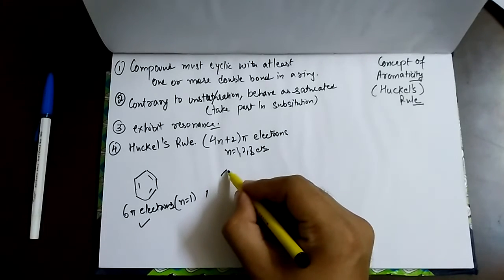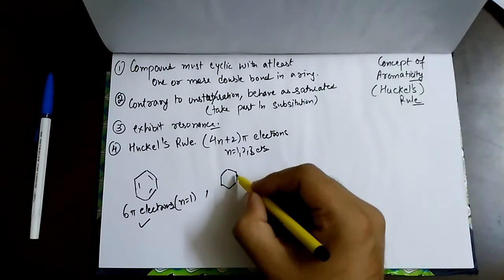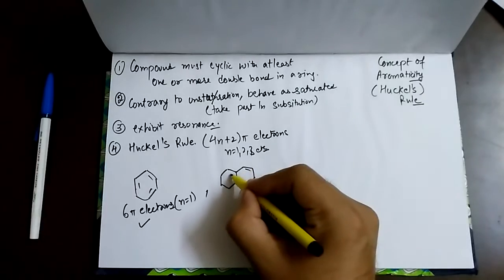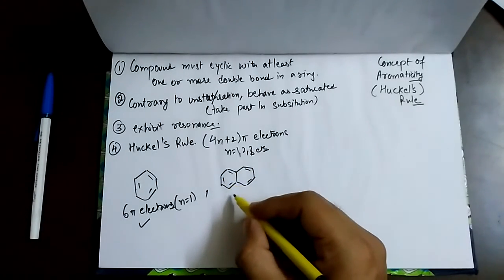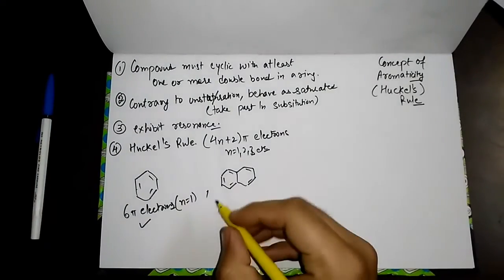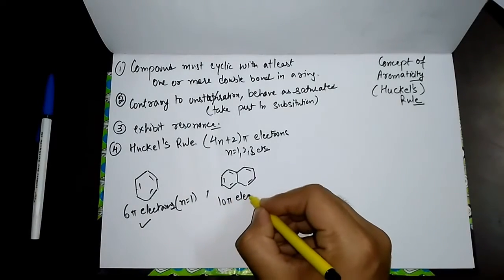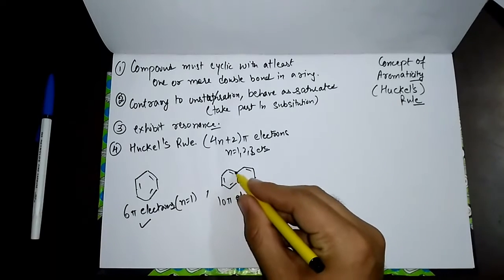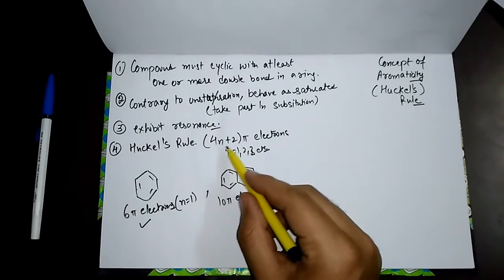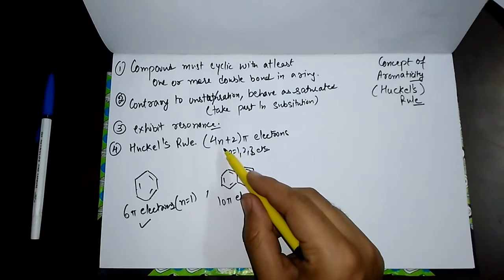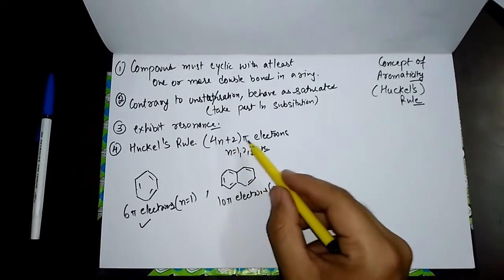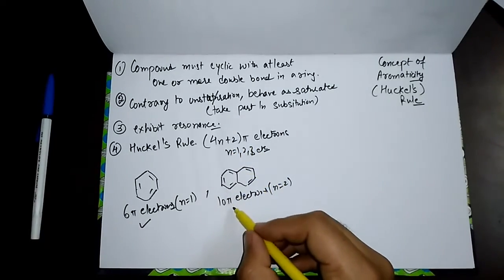Similarly, we have naphthalene. You must count the number of pi bonds. This naphthalene is having 10 pi electrons. If I place the value n equals 2, overall it will have 10 pi electrons. So we say it is a part of aromatic compounds.